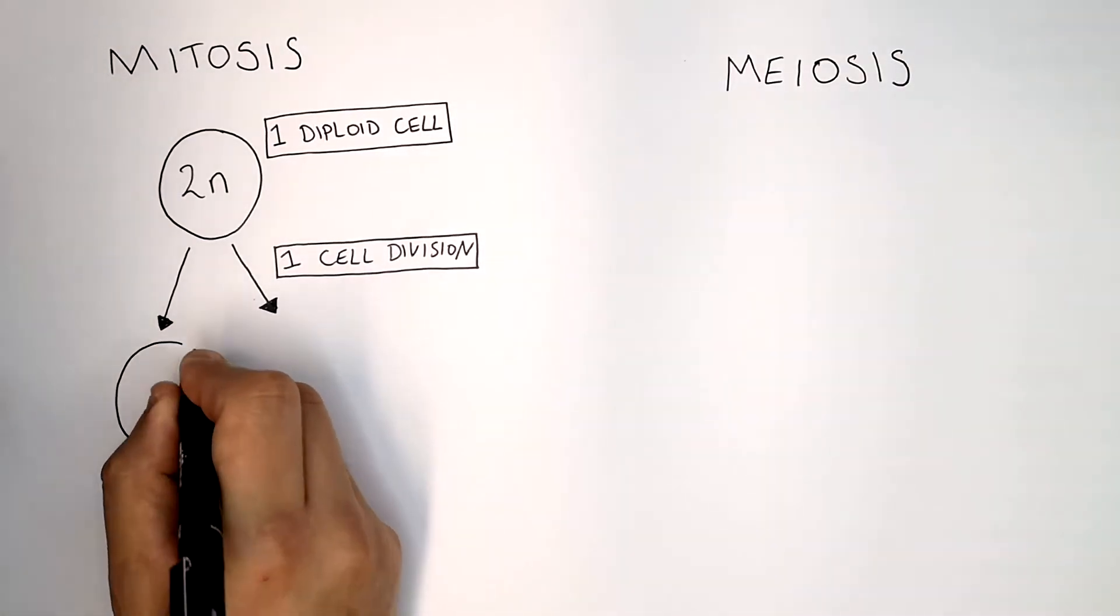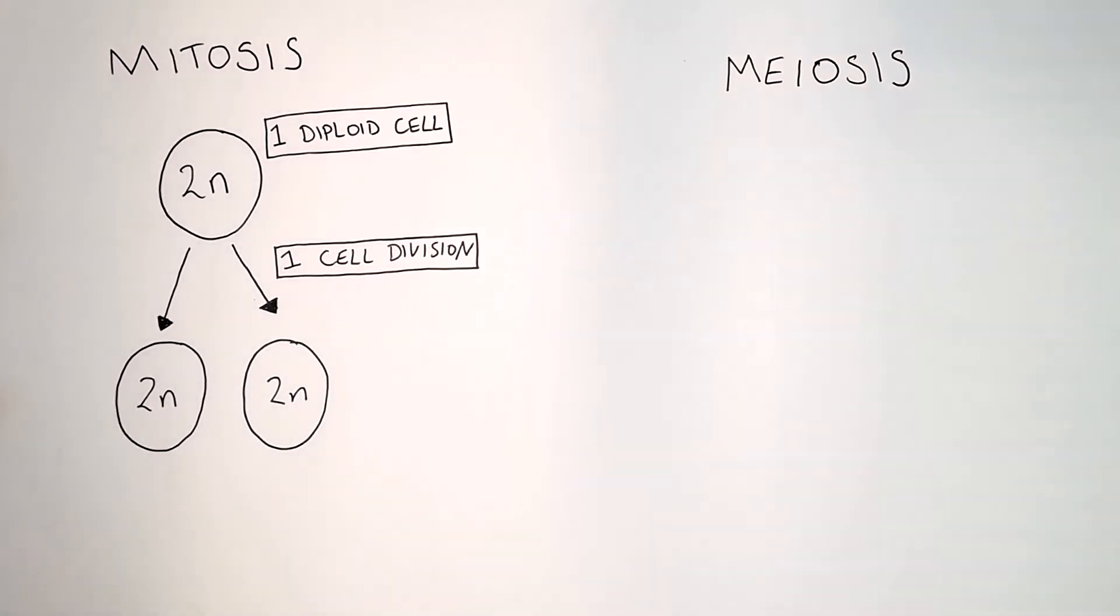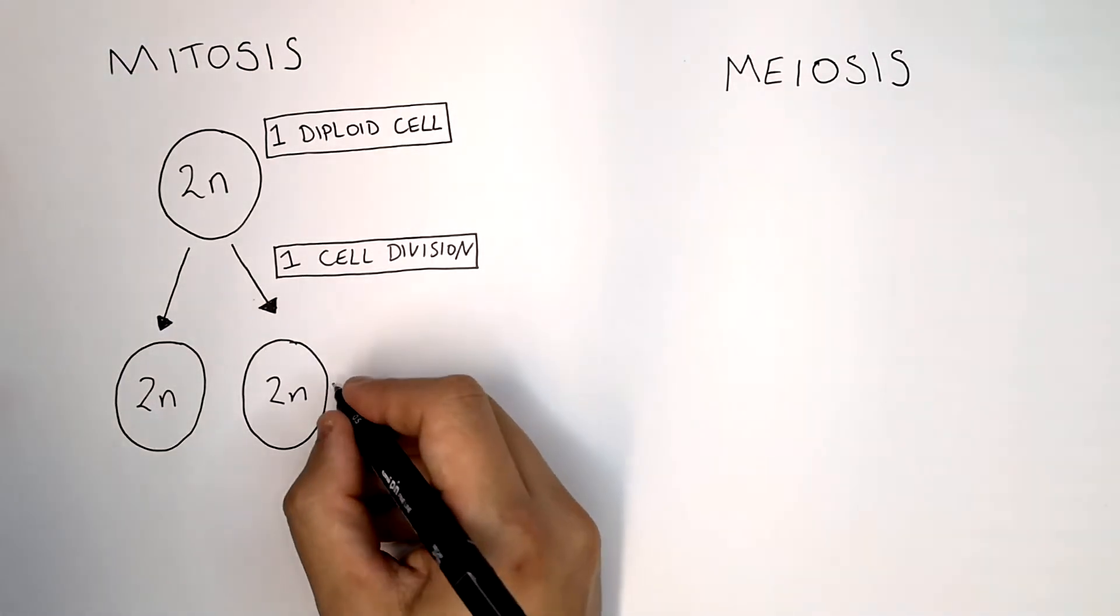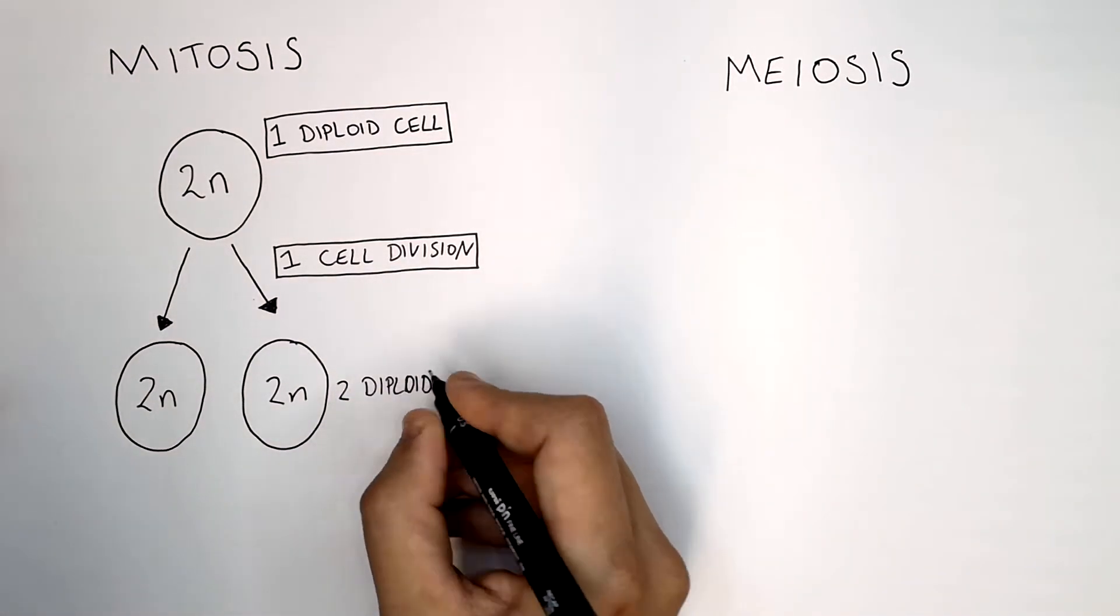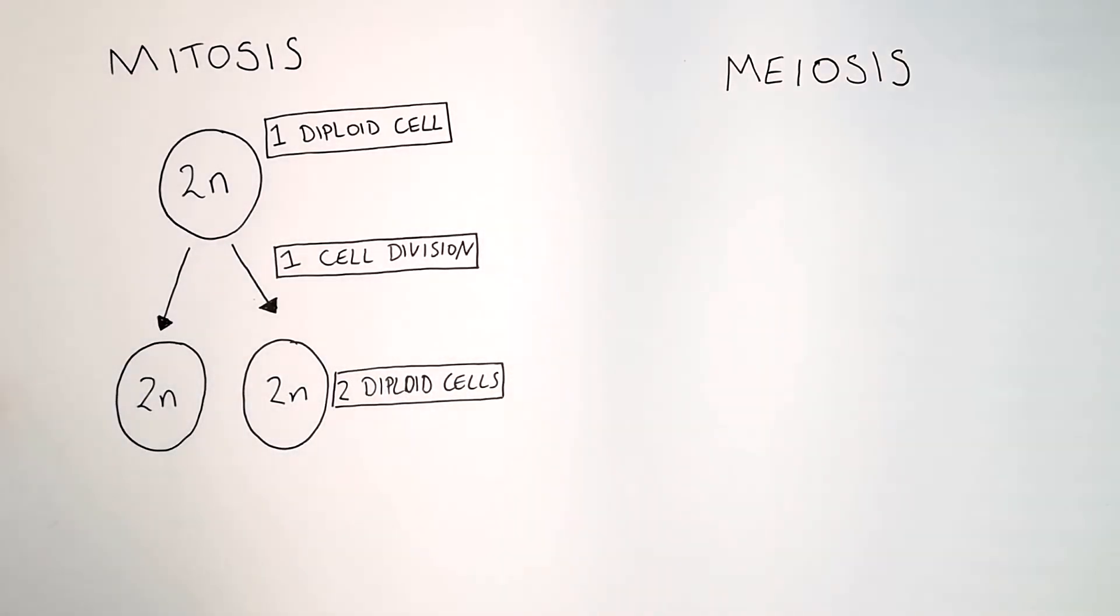The cell will divide once into two cells. So two cells are formed and they are two diploid body cells, two diploid body cells that are genetically identical cells.